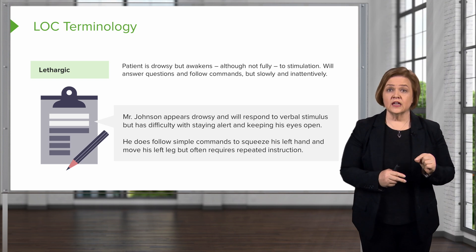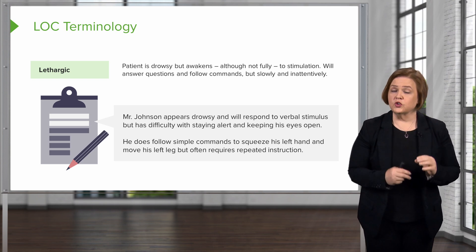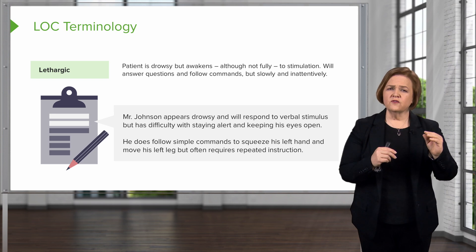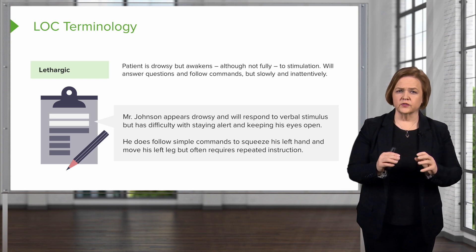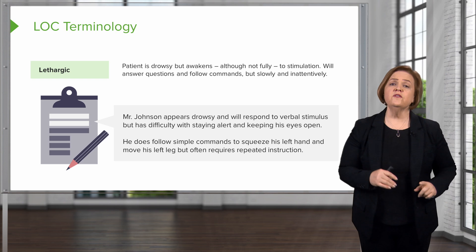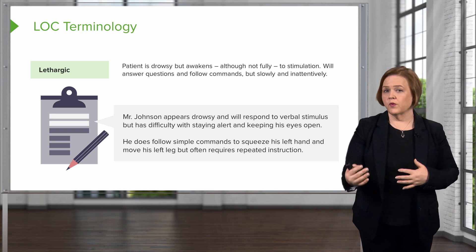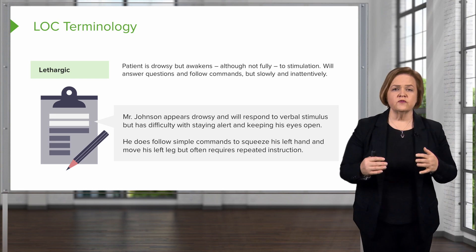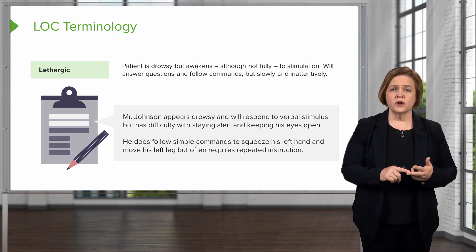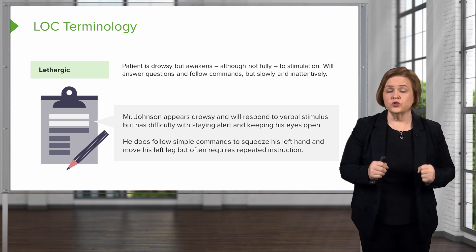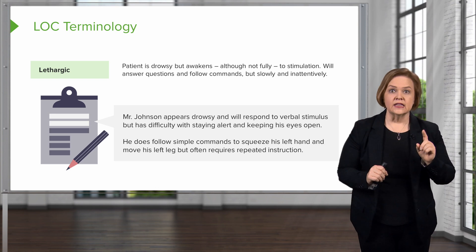It's critically important that you recognize the smallest neural and mentation changes in your patient. Usually the first signs that a patient is starting to have neural problems are changes in personality or behavior — they might become a little irritable. If a family member tells you something's not quite right about their loved one, listen to them. Those are the first signs that something could be going wrong — it might be a neural problem or an oxygenation problem. Don't brush off what someone who knows your patient outside of the hospital tells you.